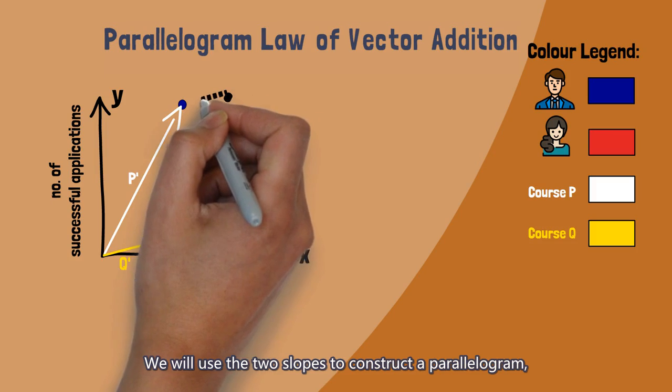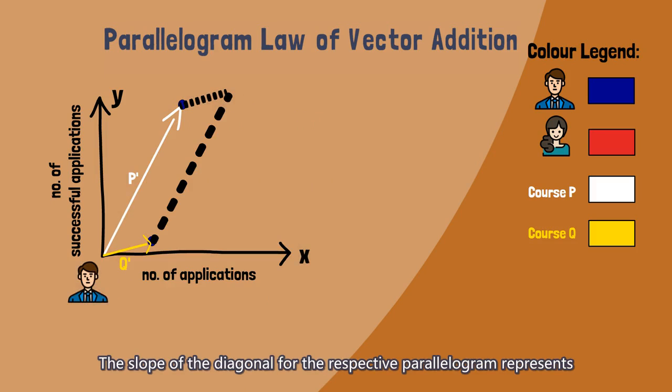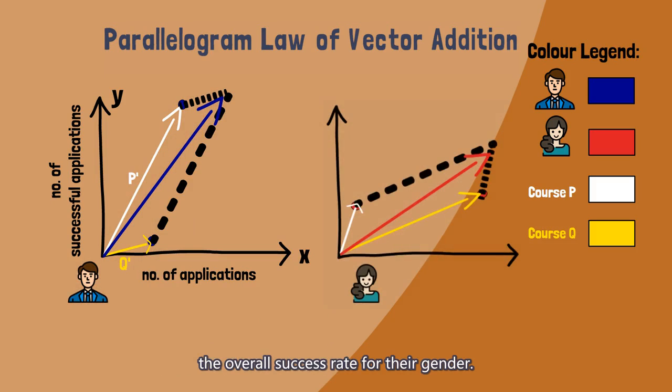We will use the two slopes to construct a parallelogram, one for men and one for women. The slope of the diagonal for the respective parallelogram represents the overall success rate for their gender.